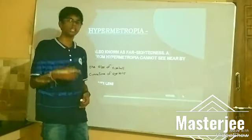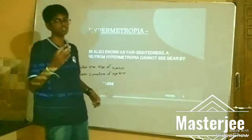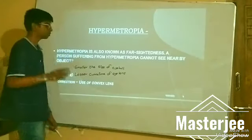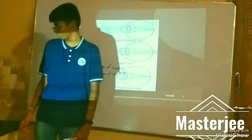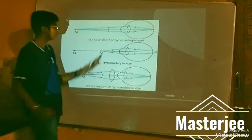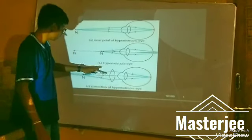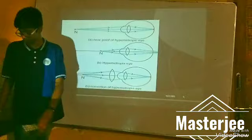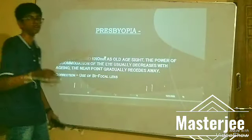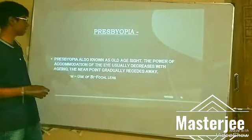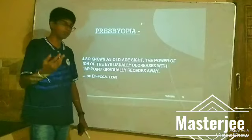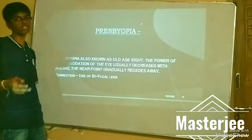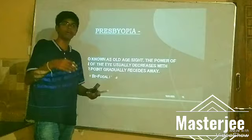Hypermetropia, or far-sightedness, is a defect in which the curvature or focal length of the eye decreases. The near point of the eye gradually shifts further away. The correction is the use of bifocal lenses. Bifocal lenses are a mixture of concave and convex lenses.